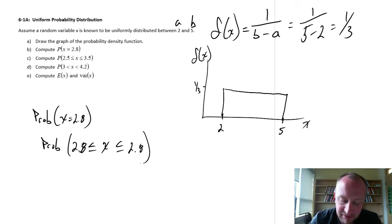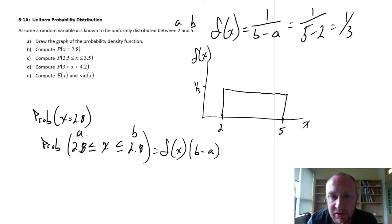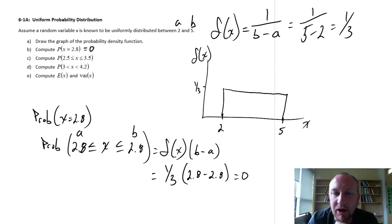In calculating the probabilities, what we need to determine is the value of that probability density function times b minus a, where this is our value b and this is our value a. So in this case, our probability density function is 1/3 times 2.8 minus 2.8, and we see right away that that is a value of 0. So the probability that x is exactly 2.8 is 0, and that's because there's an infinite number of values that x can take between 2 and 5. So the probability associated with any one of those is effectively 0.